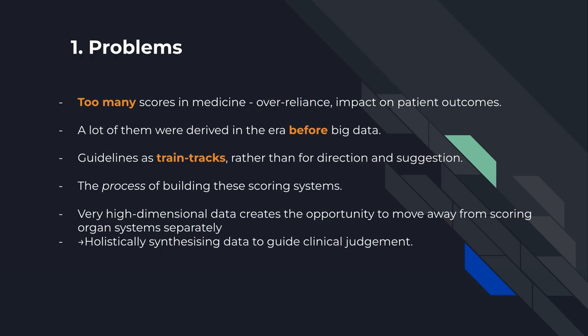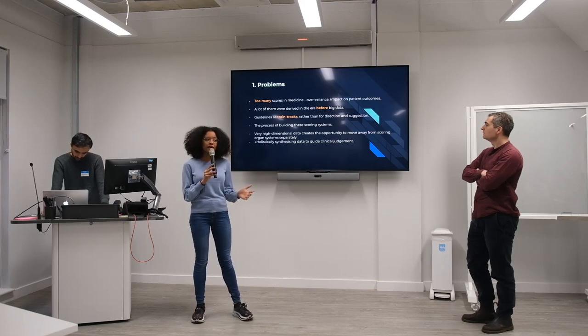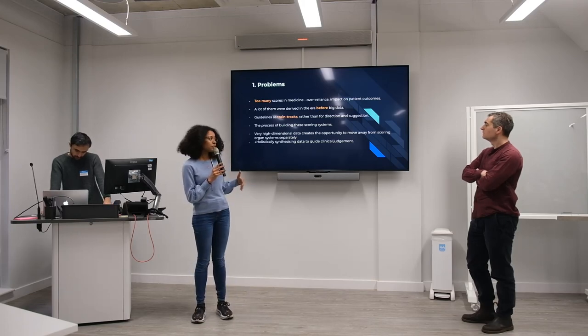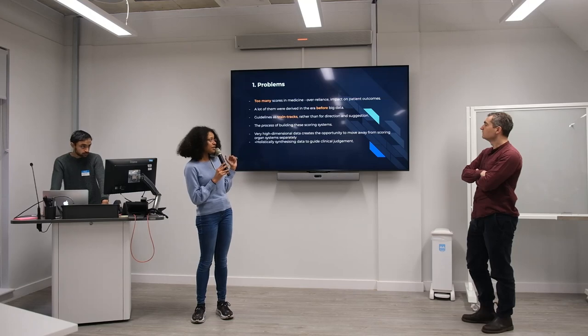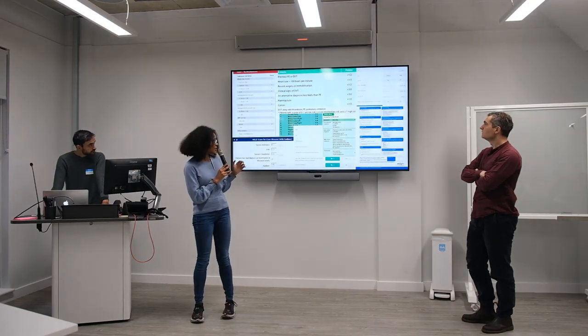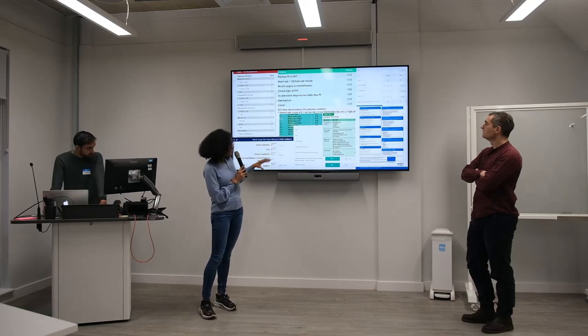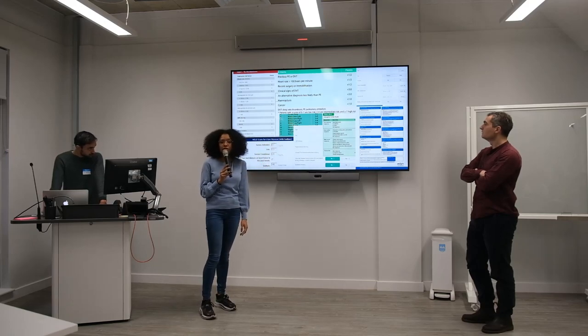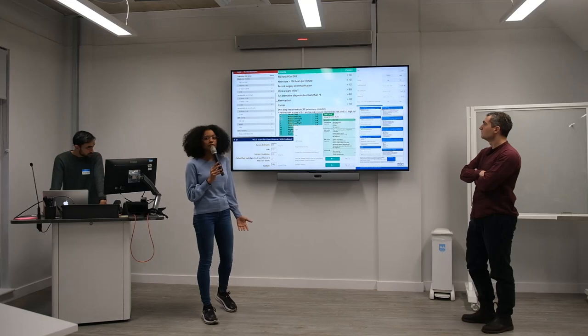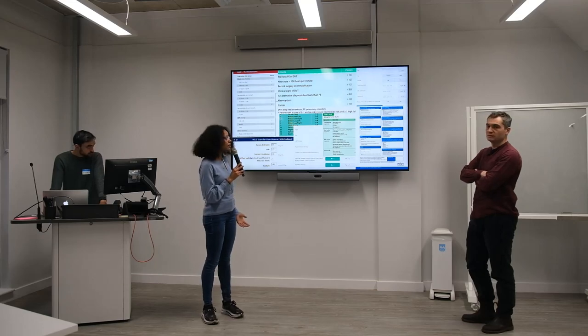How do we build a unified model using high-dimensional data that moves away from small patient populations where scoring systems are specific to those populations, and towards a way to score in general that combines all that data together? Because a lot of these different scoring systems use very similar metrics. So are they essentially testing the same thing? Can we combine them?